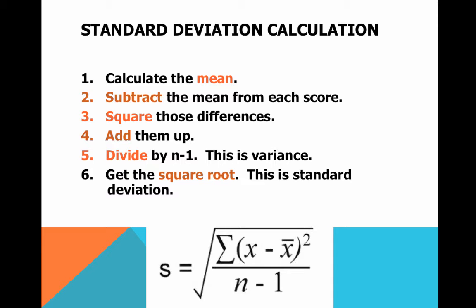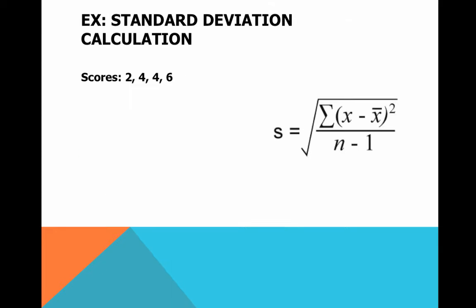Let's work through it. Here's the equation and here are four different scores. Go ahead and work through your six steps of calculating a standard deviation. Pause this video, work through it, and come back when you've got your answer. All right, let's see what you got.